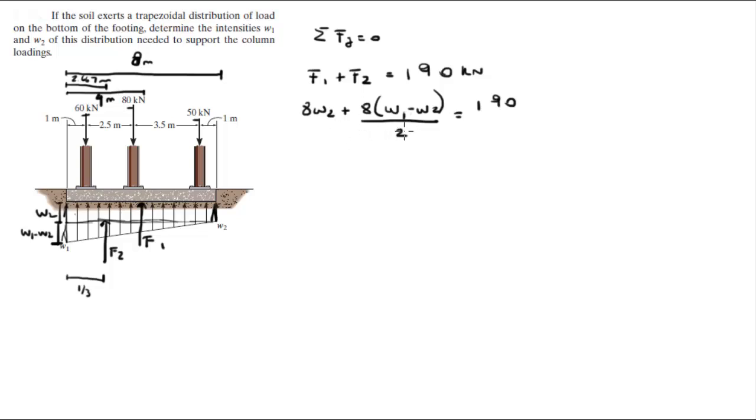Basically what we want to do is we want to simplify this equation. 8W2, 8 over 2 is 4, then distribute it so you get plus 4W1 minus 4W2 is equal to 190. When you further simplify this, you're going to get that W1 plus W2 is equal to 47.5 kilonewtons. We got one equation but we still got two variables so we need to find another equation.